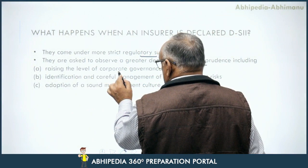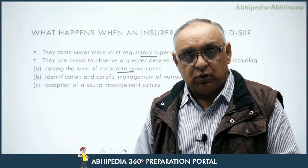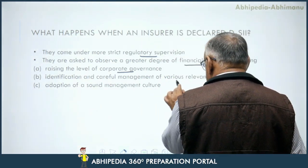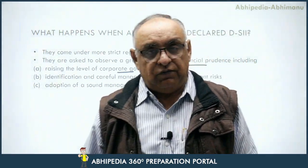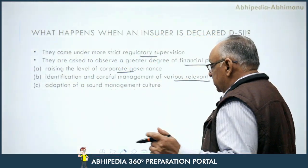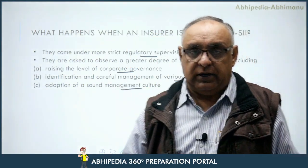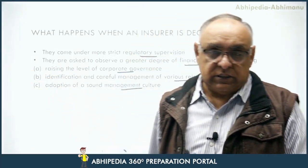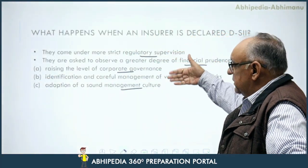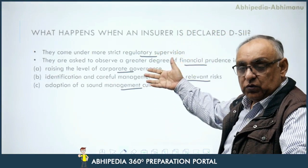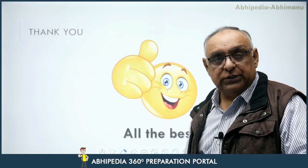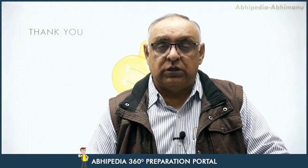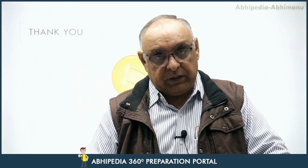They are also required to raise the level of corporate governance, improve identification and careful management of various relevant risks, and adopt a sound management culture. So a Domestic Systematically Important Insurer which is recognized as a D-SII must observe these conditions. This is all about today's topic — thank you very much, all the best, and next time we will see the next topic.